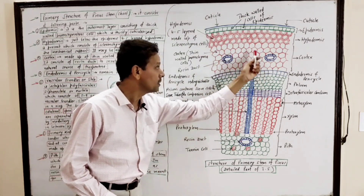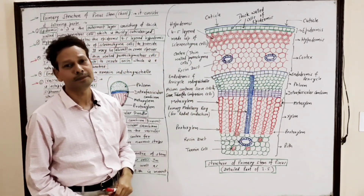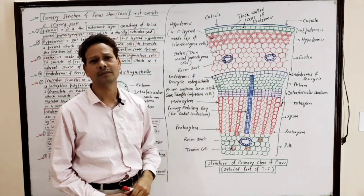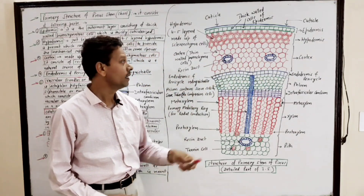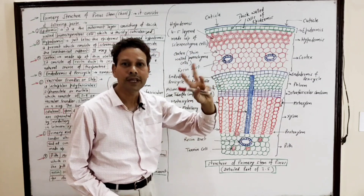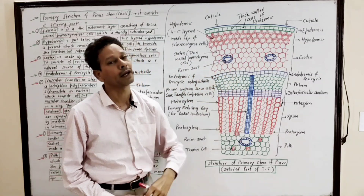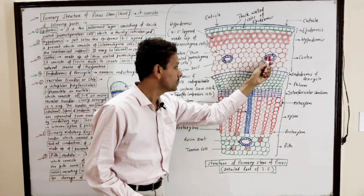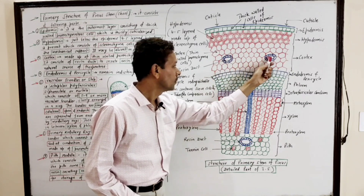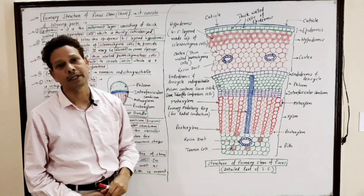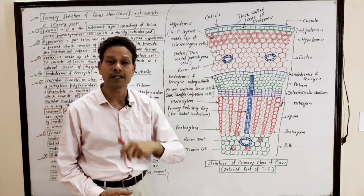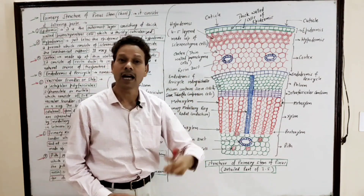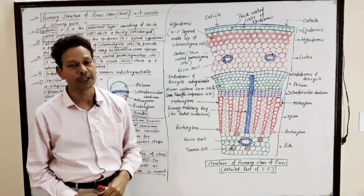Next part is cortex. Dear students, this cortex is multi-layered and consists of thin-walled parenchymatous cells. In this cortex, resin ducts are present, and these resin ducts secrete resin, which is a natural source of turpentine.